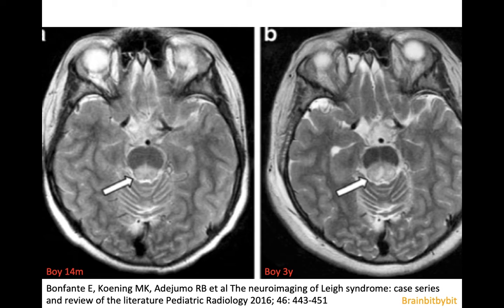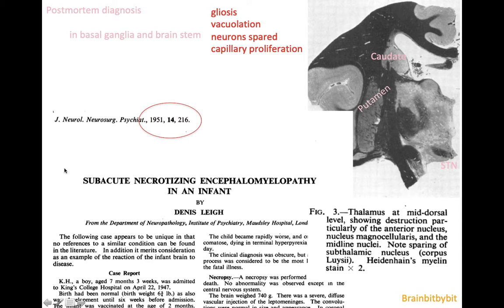The first case of Leigh syndrome was described by Dr. Leigh in an infant. The most frequent presentation is the infantile form, where patients before the age of 2 present with hypotonia. In the first case report from 1951, a seven-month-old boy eventually died and on autopsy they found involvement of his basal ganglia and brainstem, mainly the putamen. On microscopy, they saw gliosis and vacuolization with relative sparing of the neurons, emphasizing the important role of glial cells in energy metabolism, as well as capillary proliferation.